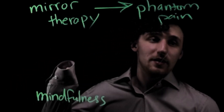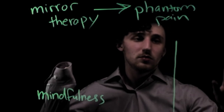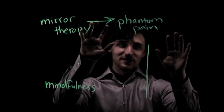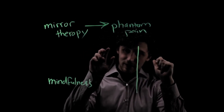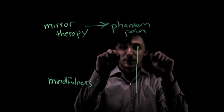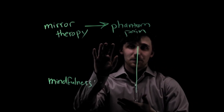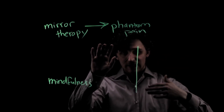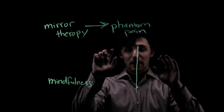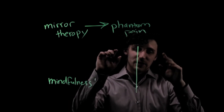Mirror therapy works by placing a mirror so that your right hand appears to look like your left hand. When you itch your right hand, your brain sees your left hand being itched. Phantom pain is thought to be caused because the brain region responsible for the missing left hand is still present, creating a disconnect. By seeing the reflection and scratching, it tricks the brain into thinking it's actually itching the left hand, removing the phantom pain.